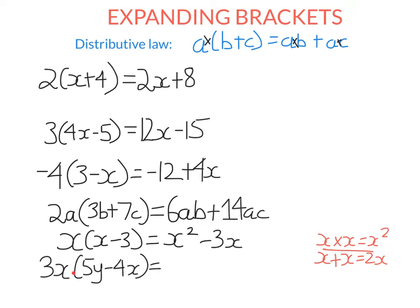If I have to expand 3x outside of (5y − 4x), it may look a little different but we follow the distributive law like in all previous examples. So we go 3x times 5y — 3 times 5 is 15 — and then we have x times y. Now 3x times negative 4x: positive times a negative is a negative, so it's negative 12, and x times x is x squared. So don't do 3x plus 4x — it's 3x times negative 4x, and that's how we get the x squared.